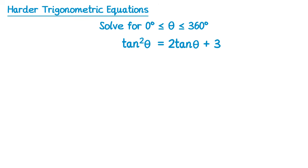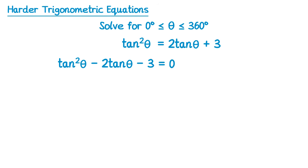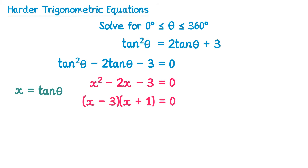This next question is a little bit harder. We use the same tactic — get all terms on the left and factorise. On the right we have 2 tan theta plus 3, so we subtract that from both sides, giving tan squared theta minus 2 tan theta minus 3 on the left and 0 on the right. This looks like a quadratic in disguise. We use a substitution: let x equal tan theta, so tan squared theta becomes x squared, giving x squared minus 2x minus 3 equals 0. This factorises as x minus 3, times x plus 1, equals 0.